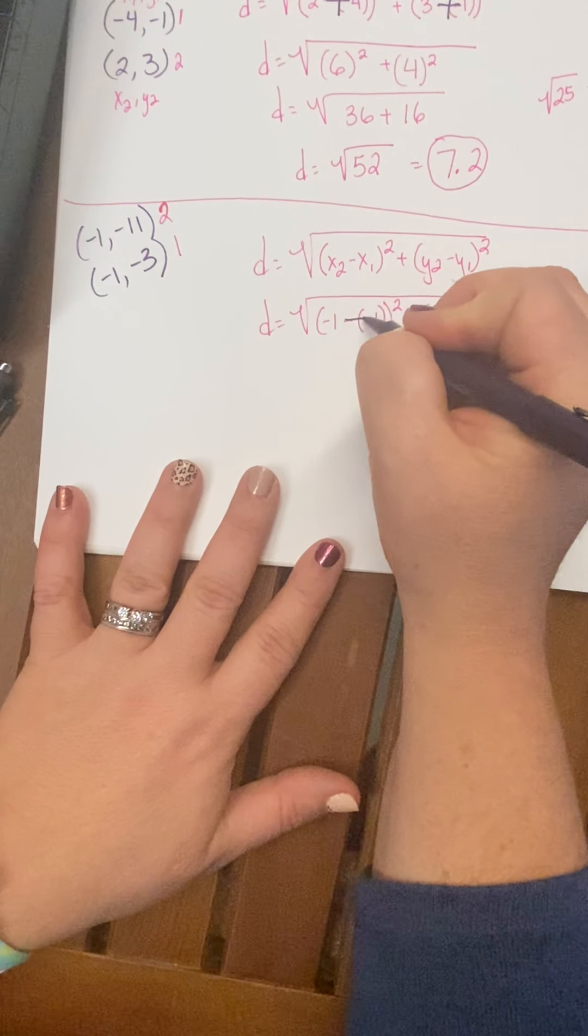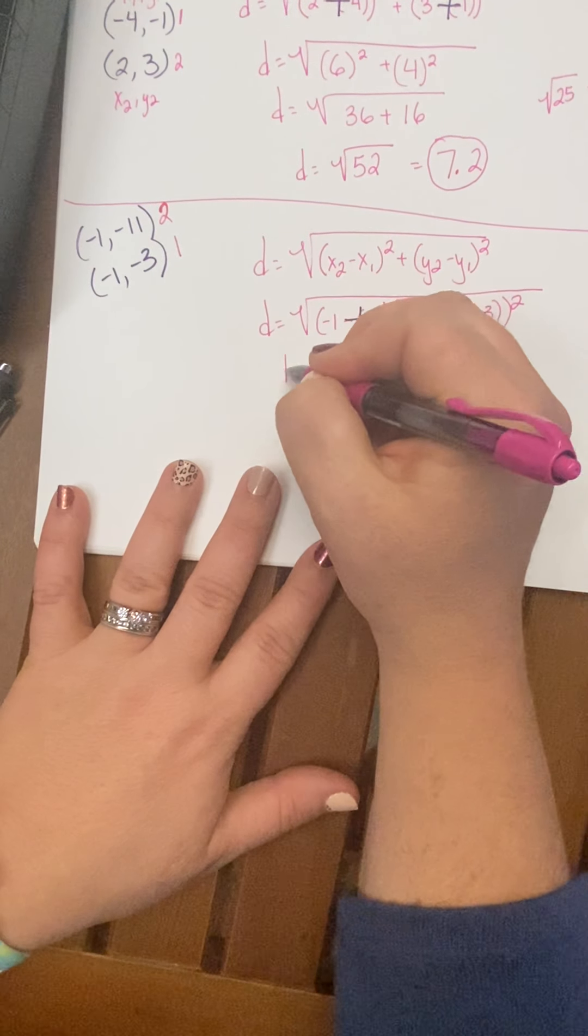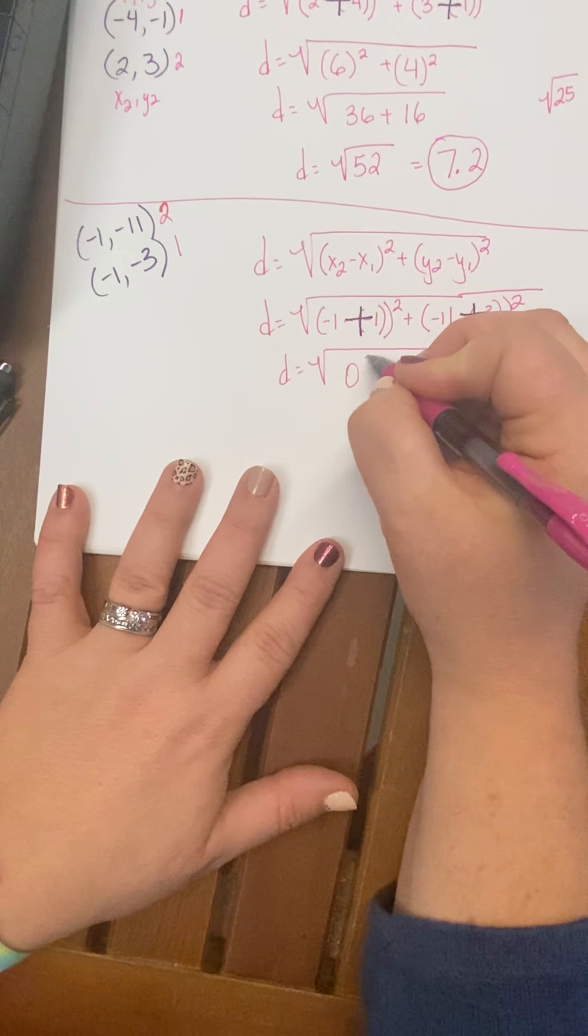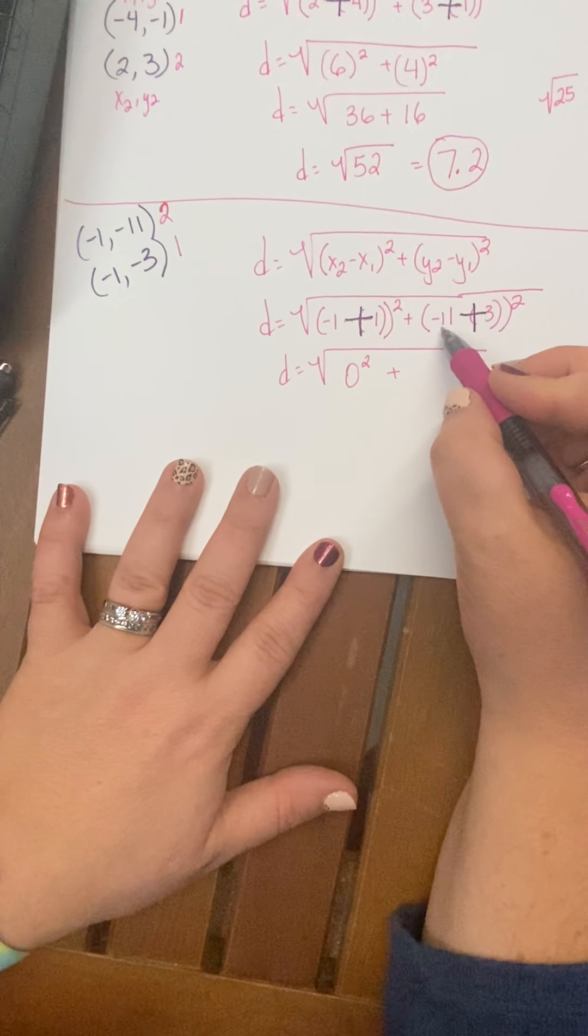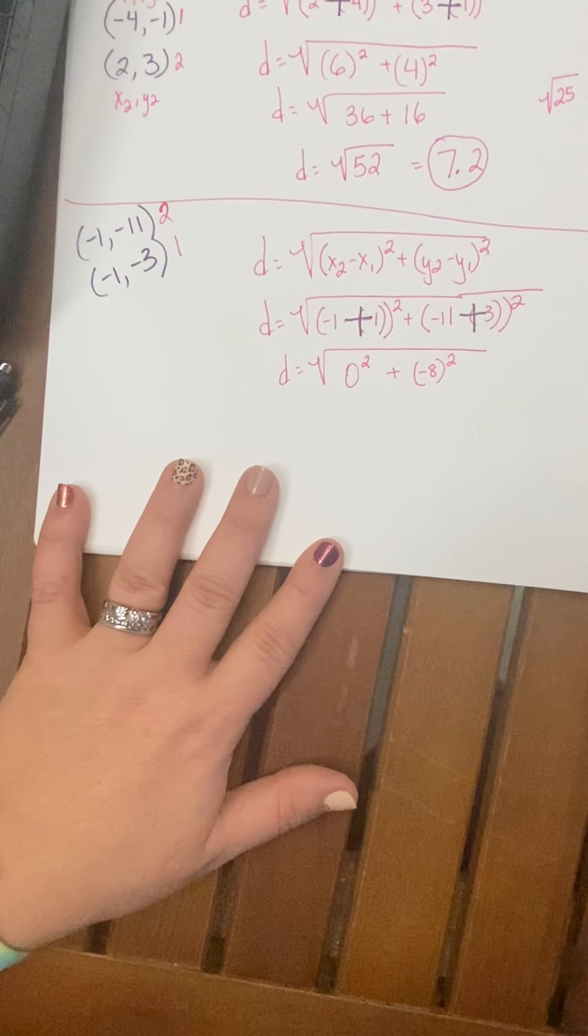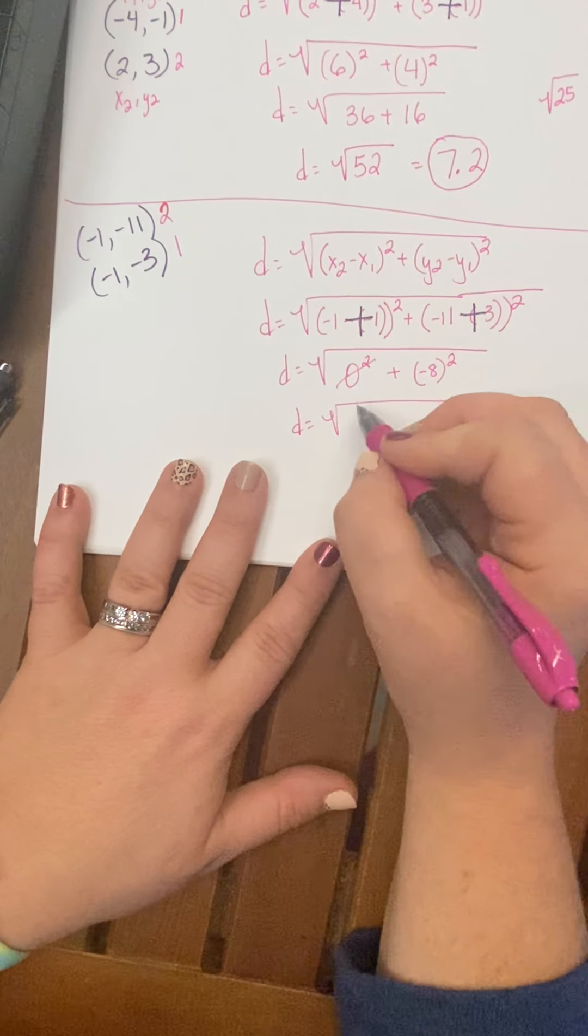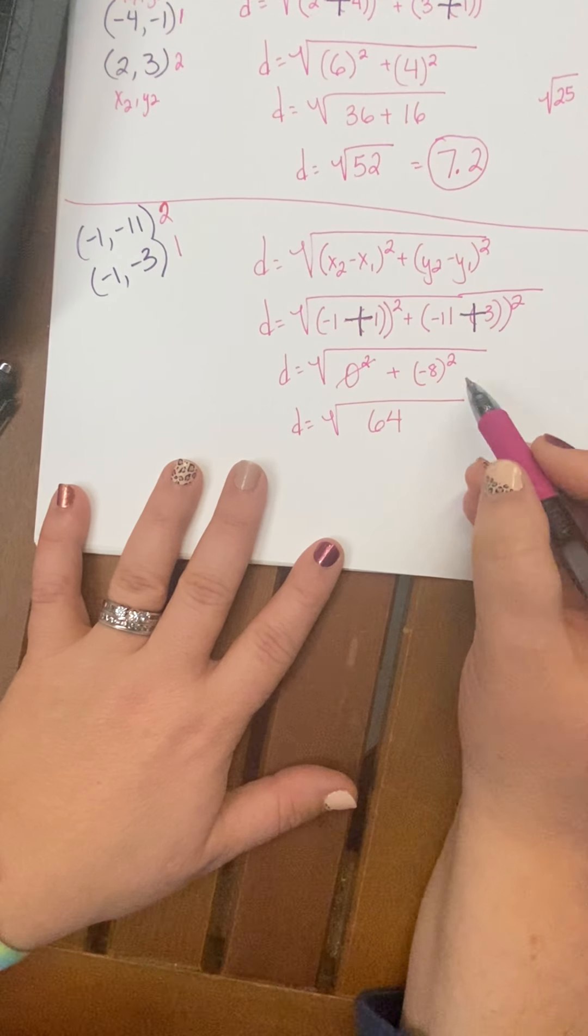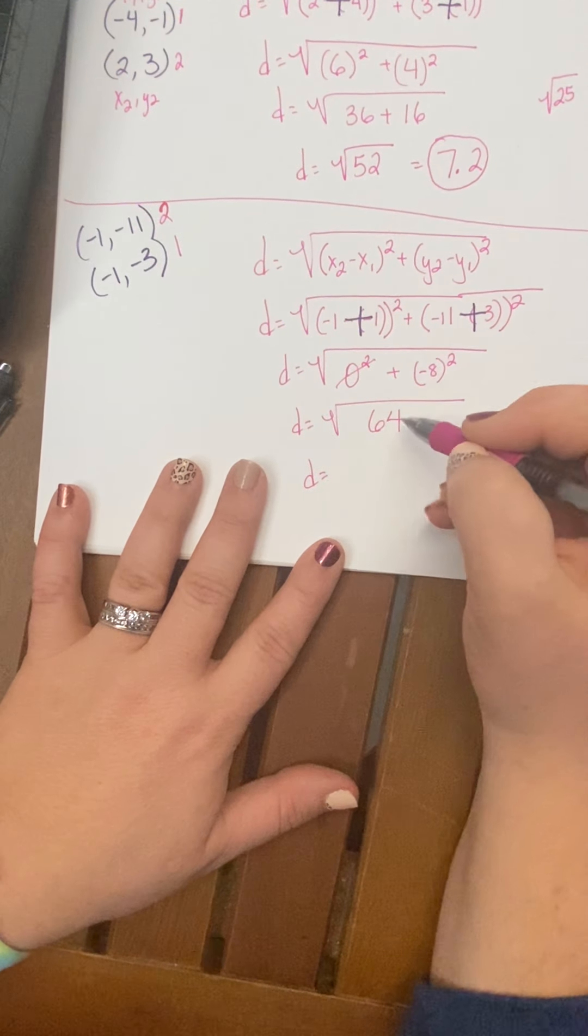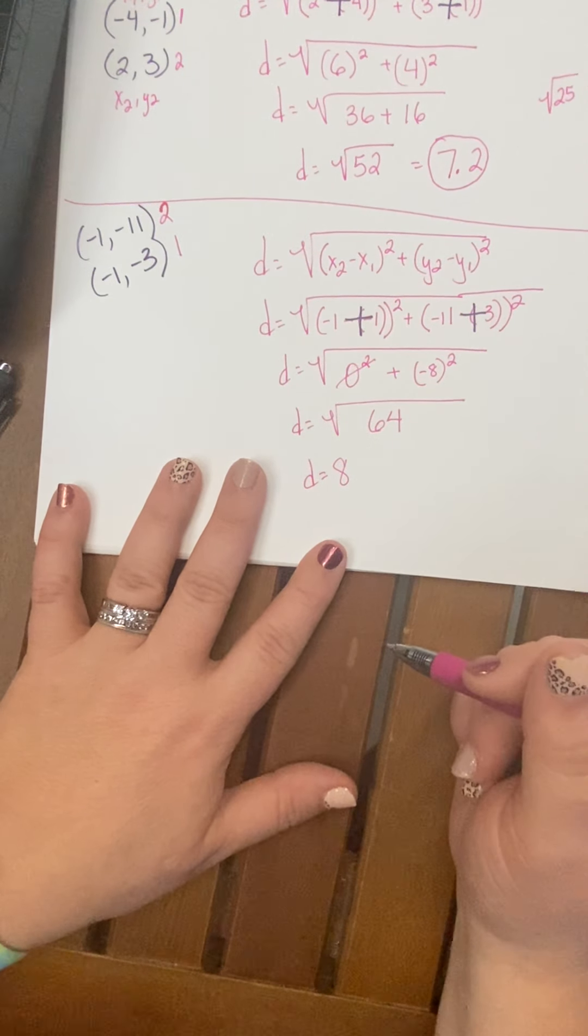So I'm going to, my minus negative is always a plus. So we have negative 1 plus 1, which is 0, 0 squared. Here we have negative 11 plus 3 is negative 8 squared. So 0 squared is just 0, okay? And negative 8 squared is 64. Negative 8 times negative 8 is positive 64. And look, we can do this one evenly, because we know that the square root of 64 is just 8, because 8 times 8 is 64, okay?